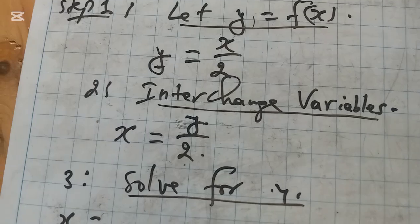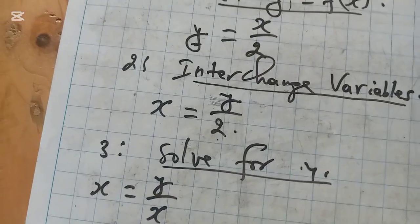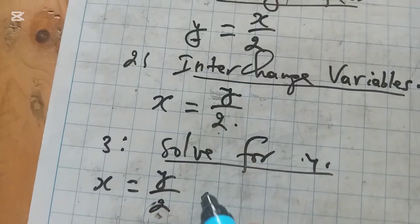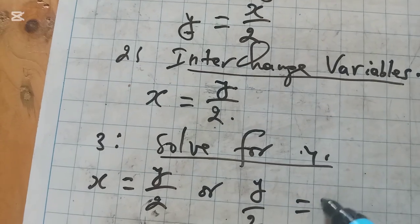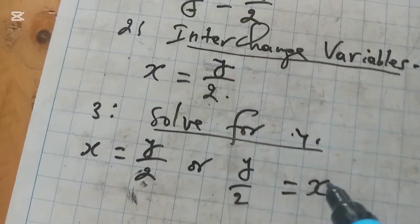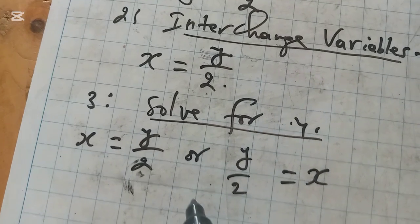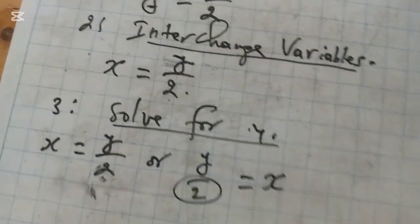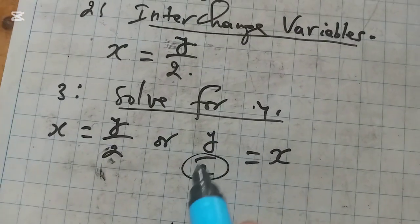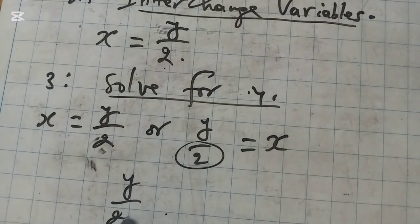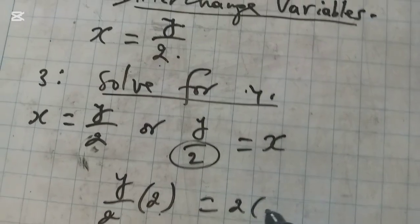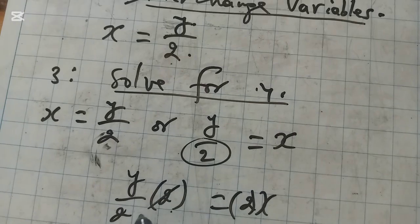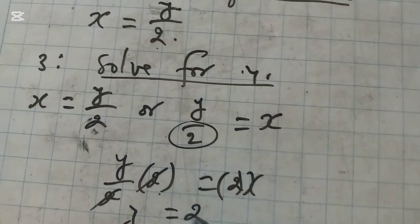So x equals y over 2, or y over 2 equals x. You have to remove this 2 so that we remain with only y. To remove this 2, you have to multiply by 2 on both sides. If we simplify here, you get y which is equal to 2x.